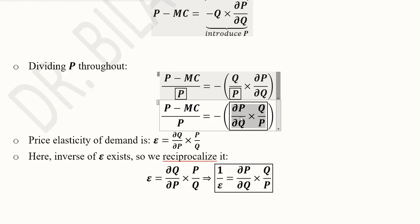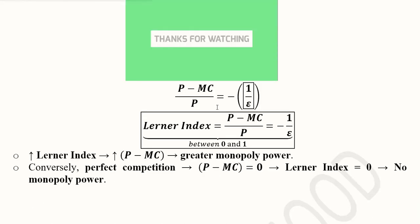In the next step we have written the reciprocal of epsilon, the price elasticity of demand. Now we are at that stage where the Lerner Index is developed: (P - MC)/P = -1/ε. Both of these ways are equally applicable. If I am given the value of elasticity of demand I can use this formula, and if I am given the value of price and marginal cost I can resort to this one. The answer would be between 0 and 1.